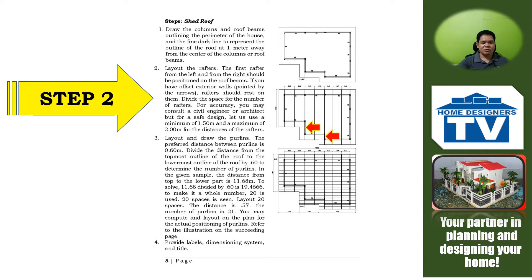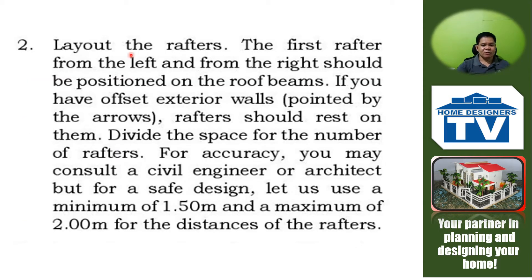Step two is to lay out the rafters. The first rafter from the left and from the right should be positioned on the roof beams if you have offset exterior walls, as pointed by the arrows, and rafters should rest on them. Divide the space by the number of rafters. For accuracy, you may consult a civil engineer or architect for a safe design. The minimum distance is 1.5 meters and the maximum is 2 meters for rafter spacing.